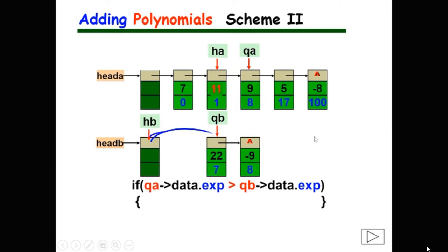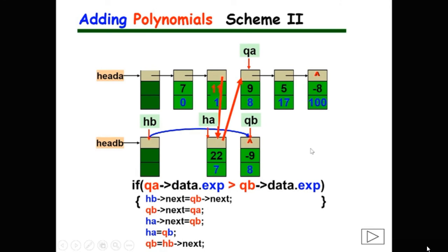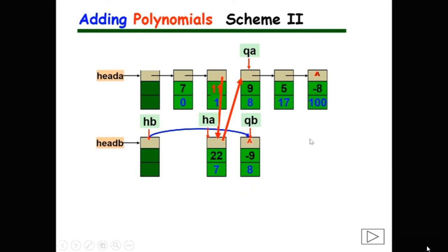To perform the insertion: first delete QB from list B by setting HB's next to QB's next. Then insert QB between HA and QA: set QB's next to QA, and HA's next to QB. Since QB is now QA's predecessor, set HA to point to QB, and QB moves to HB's next. Repeat and compare their exponents again.